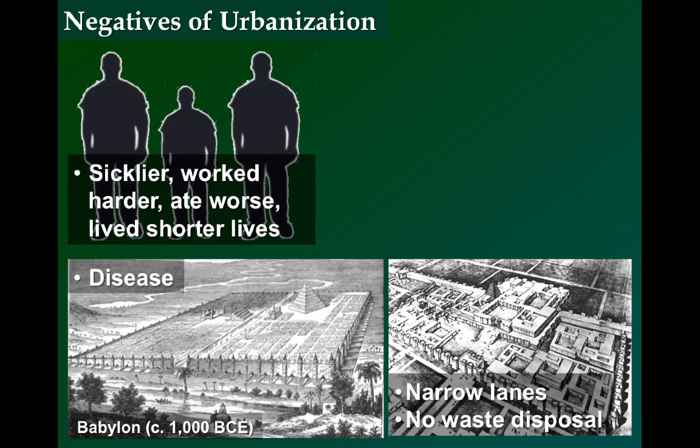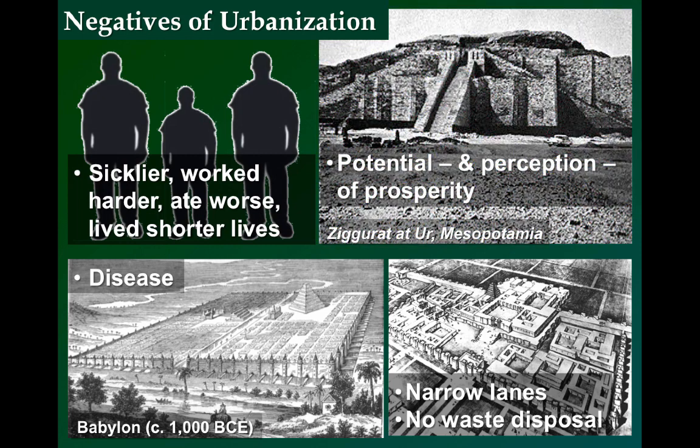The average hunter-gatherer was healthier, taller, stronger, and lived longer. However, people are social beings, and most prefer to be concentrated around each other. The potential for prosperity was greater in cities because there are more opportunities. However, the majority of people were arguably worse off than if they had remained in rural conditions.